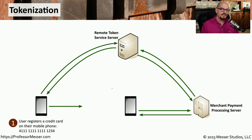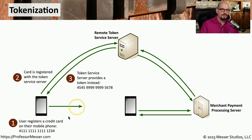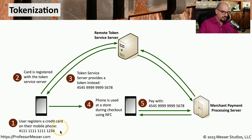Here's how credit card tokenization works behind the scenes. The first step is to register a credit card number on your mobile phone. During registration, it reaches out to a remote token service server, which provides you with a series of tokens stored on your local phone. Notice that the token is a very different number than the actual credit card number registered on your phone. In most cases you won't see this token, although if you look at a receipt you may notice it shows a credit card number that doesn't match the actual one. Once the tokens are received, your phone is ready for checkout, and during the checkout process near field communication is used to transfer that token into the payment system.